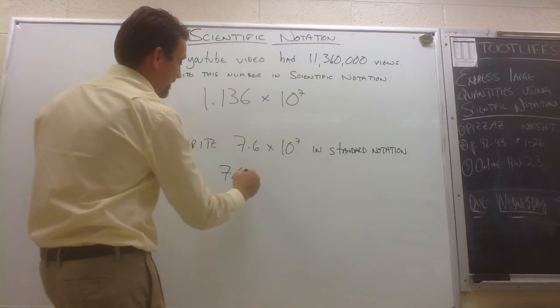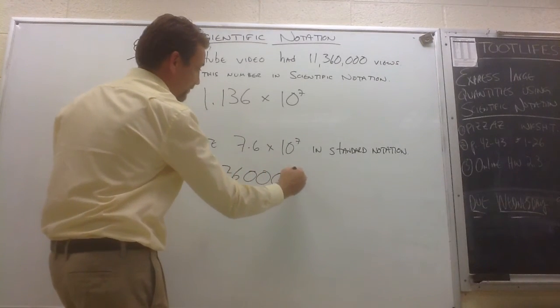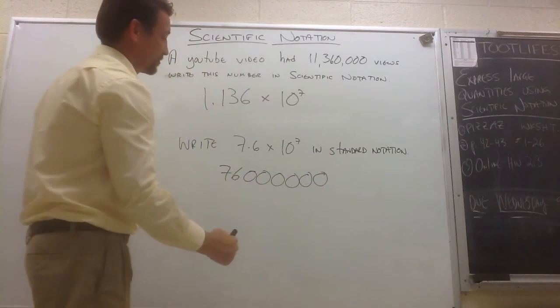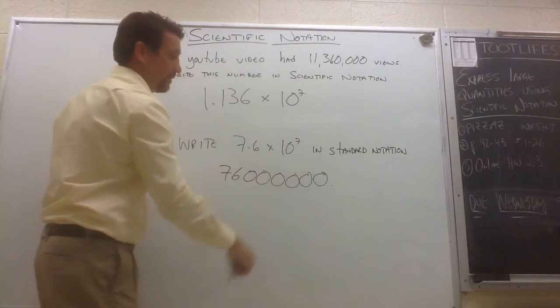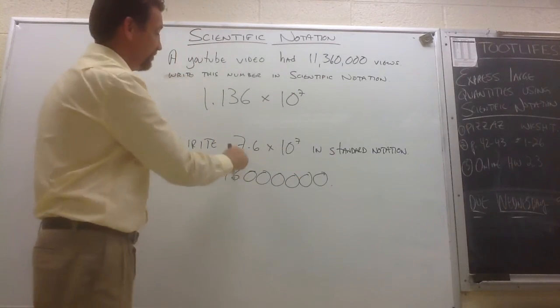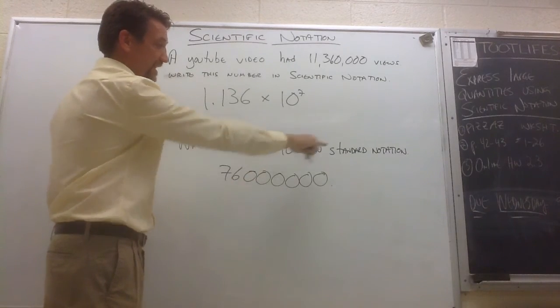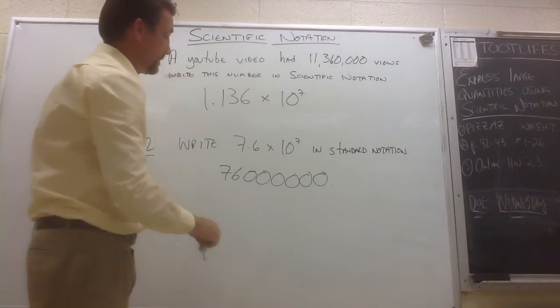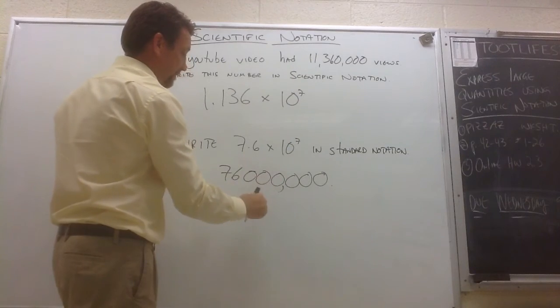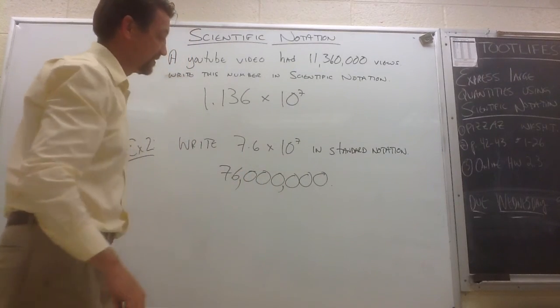So I have a 76 followed by 1, 2, 3, 4, 5, 6 zeros. And now, if I put my decimal there, I've moved my decimal 7 places to the right. And I can put my commas in as needed.